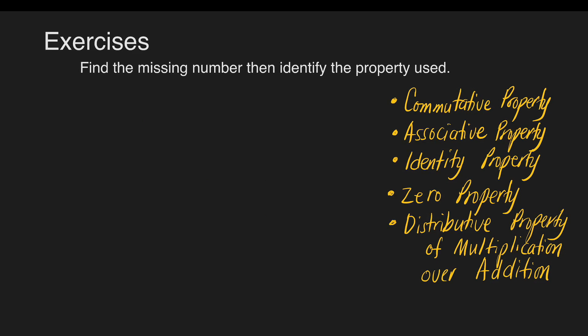Next: 1902 times 0 is equal to blank. Our answer is 0, because any number multiplied by 0 is 0. So the property used in this example is the zero property of multiplication.